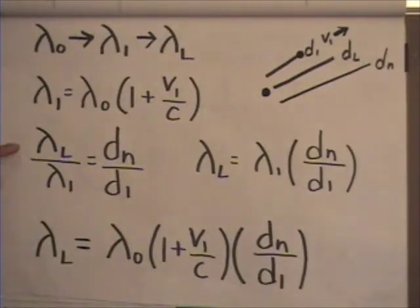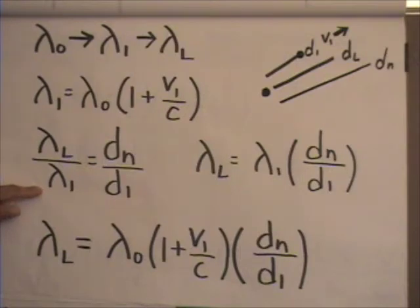The question of why dn over d1 is the correct ratio to calculate the Cosmological redshift component is addressed in the next video segment, which is entitled why dn over d1. And that's w-h-y, not the letter y, why dn over d1.